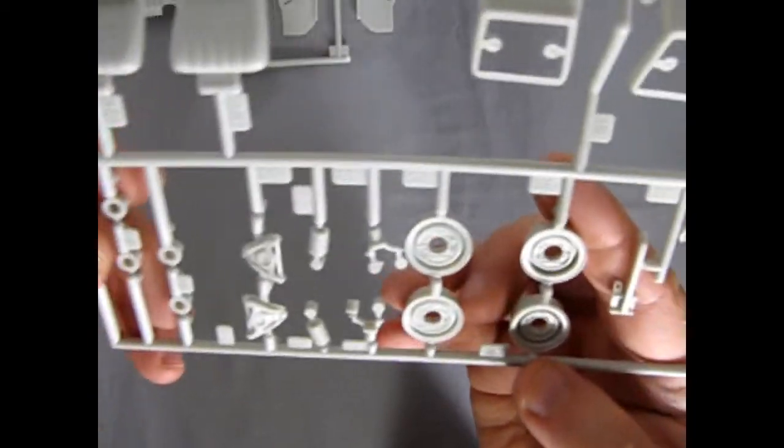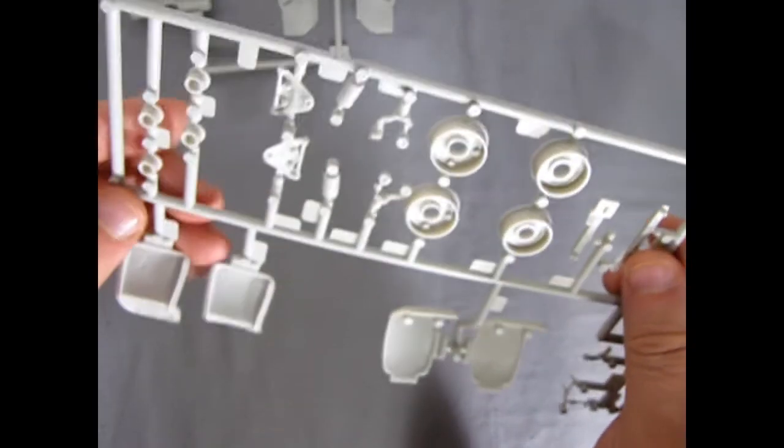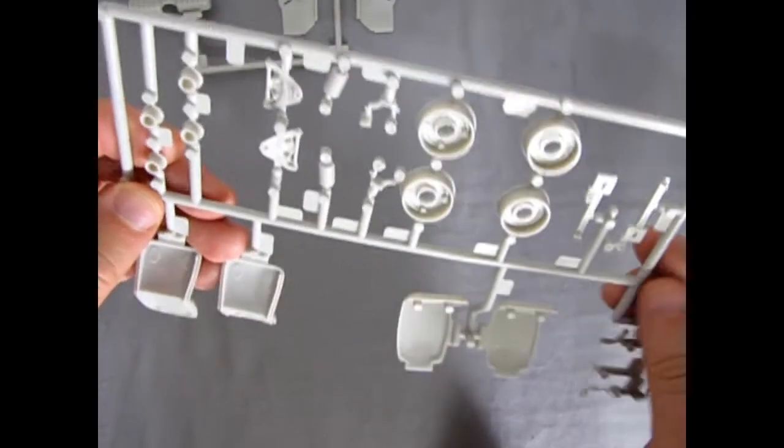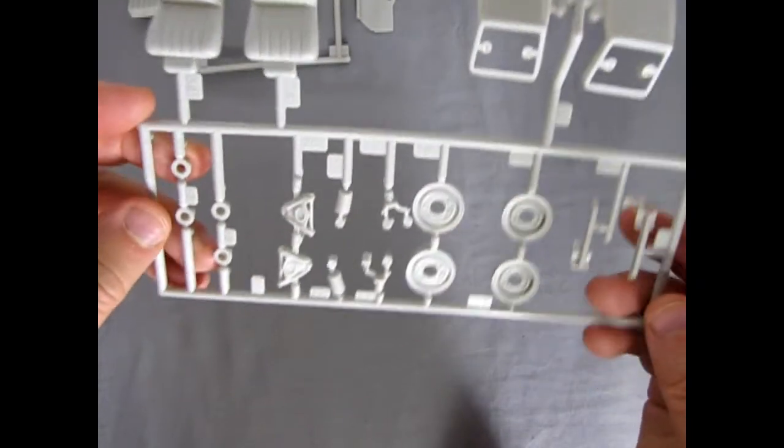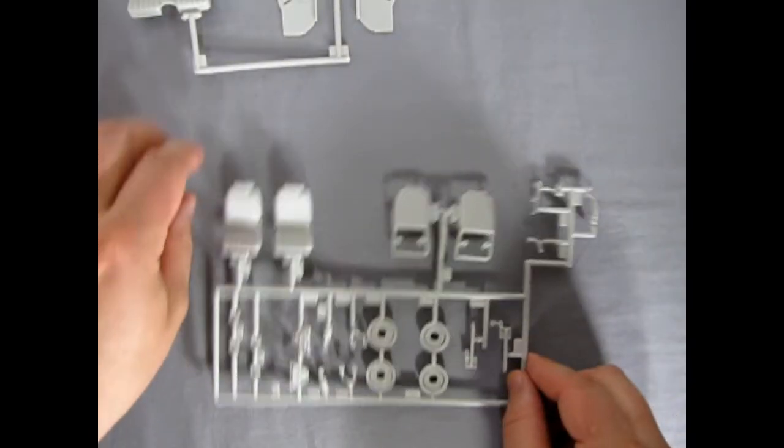And then those are those retaining clips, or whatever you want to call them, for our wheels. And remember to be careful not to get glue on any of these surfaces out here. Or else you'll lock your wheels together into the thing and they won't be able to freely rotate into your axle.